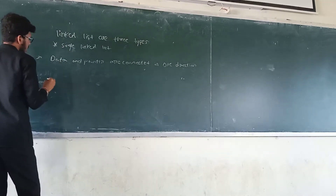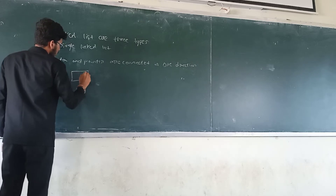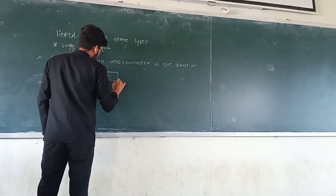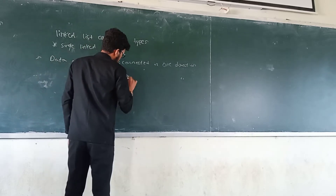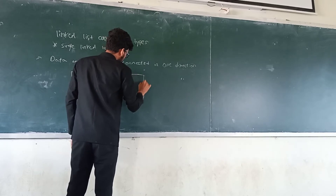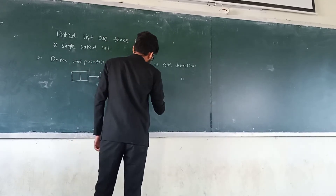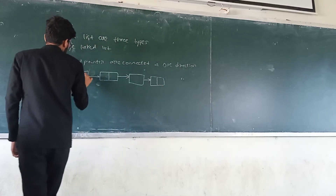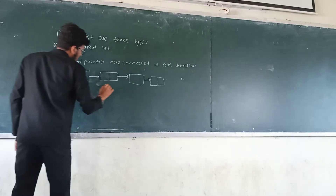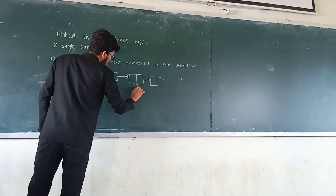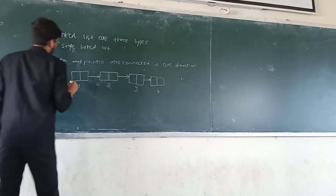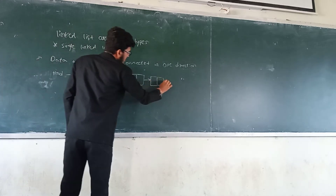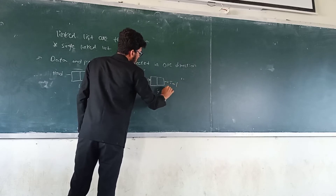We can explain the representation of single linked list. We can recognize nodes: first node, second node, third node, fourth node. This is the head part and this is the tail part because it is last.